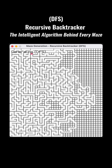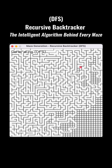As long as the stack is not empty, the cell at the top of the stack is considered the current cell. The algorithm then searches for unvisited neighboring cells of this current cell. If at least one such unvisited neighbor exists, one is chosen randomly.